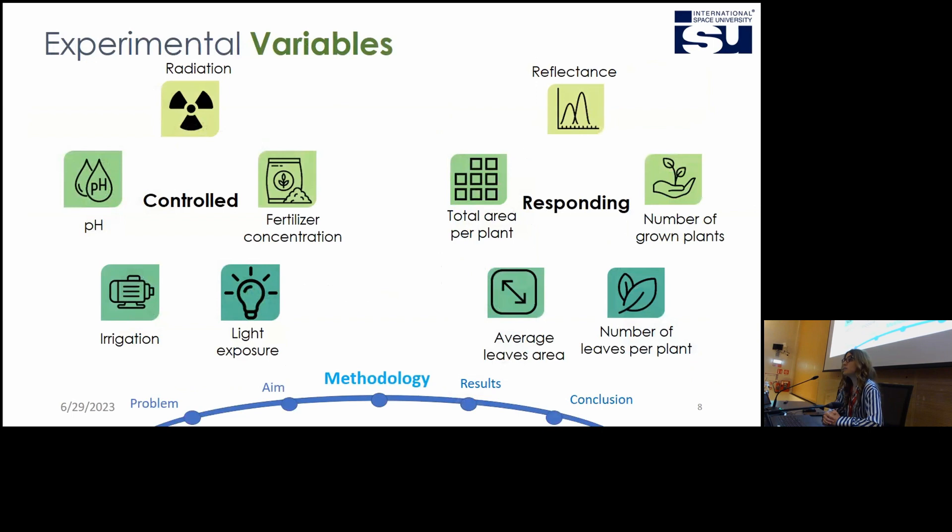In my experiment I controlled multiple variables as the radiation, the fertilizer concentration and the pH. As a result I analyzed the number of grown plants, number of leaves per plant, the average area and the total area per plant and also the reflectance.